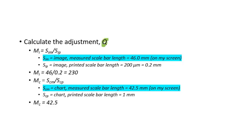Now we have to calculate the adjustment factor Q. I previously made these measurements using a ruler against the scale bars on the screen and the printed values. The scale bar of the image measured (S sub IM) was 46 millimeters on screen. The scale bar of the image printed (S sub IP) was 200 microns. For the grain size charts, the scale bar measured was 42.5 millimeters, and the scale bar printed was 1 millimeter.